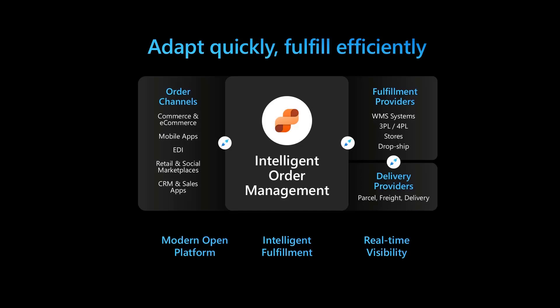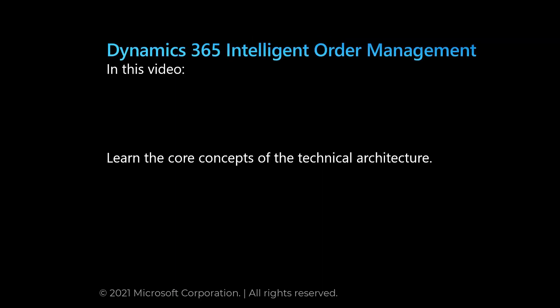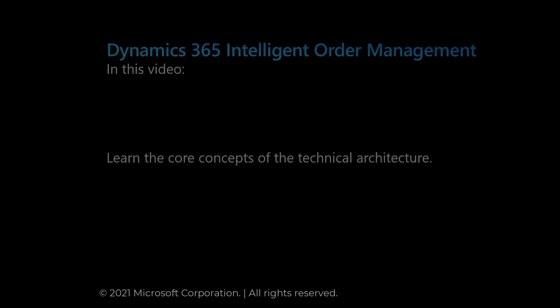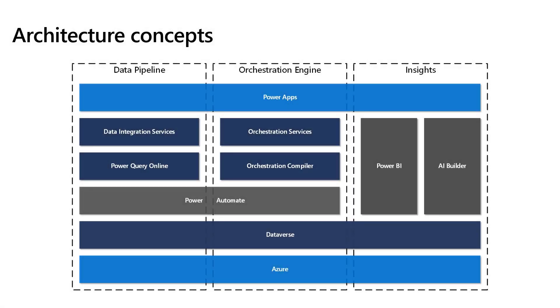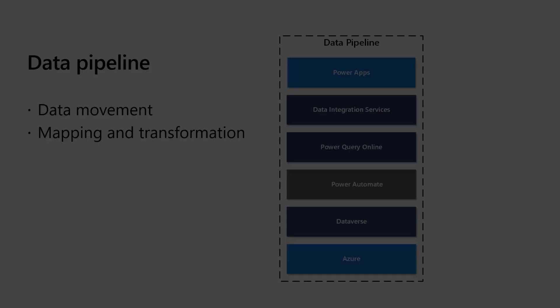In this video we will provide an overview of the core architecture concepts of the Dynamics 365 Intelligent Auto Management solution. We think of the architecture as three main components: the data pipeline, the orchestration engine, and the insights platform.